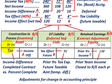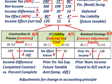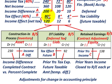Construction in Process is a debit; Deferred Tax Liability and Retained Earnings are credits. The Deferred Tax Liability credit of $92,000 represents the cumulative tax effect: $80,000 in year X1, $8,000 in year X2, and $4,000 in year X3. This reflects the greater taxes owed under the percentage of completion method compared to the completed contract method used for tax purposes.